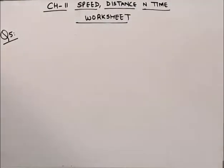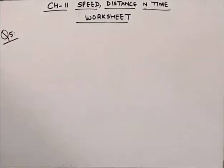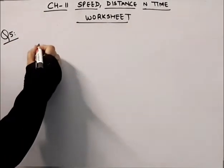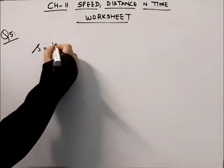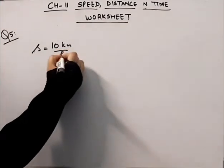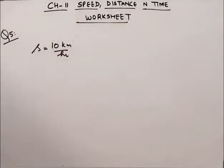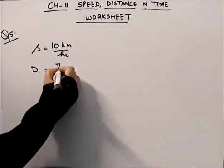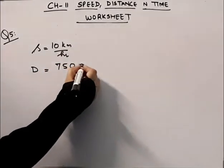Hello everybody. Today we will be doing question number 5 from the worksheet chapter Speed, Distance and Time. The question is: a man runs at a speed of 10 km per hour. We have to find out the time he will take to cover a distance of 750 meters.